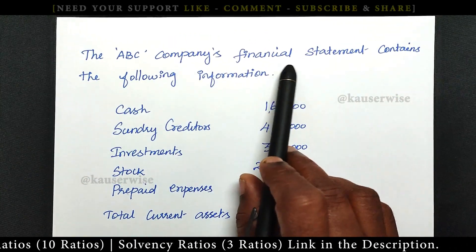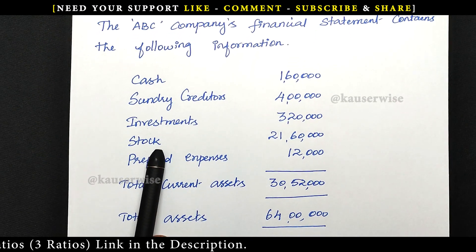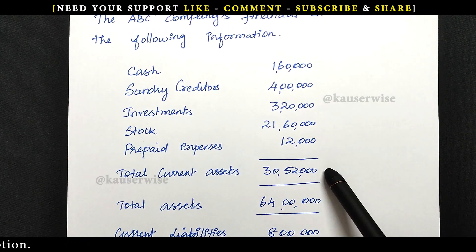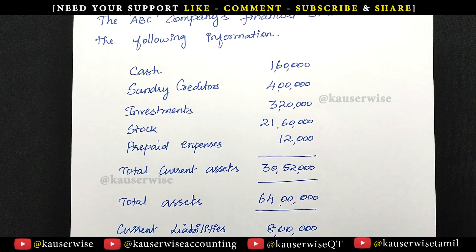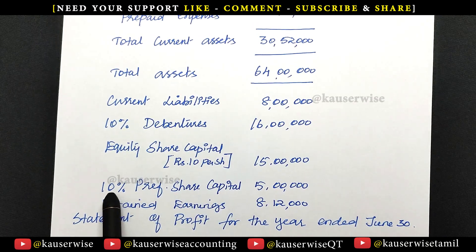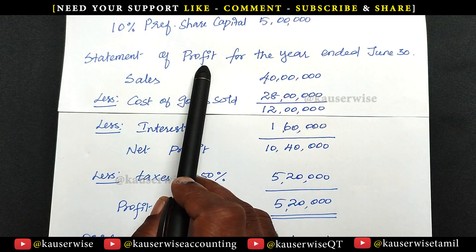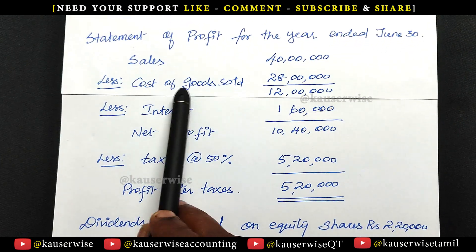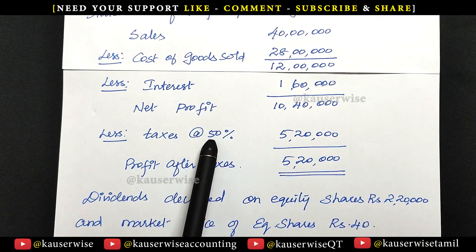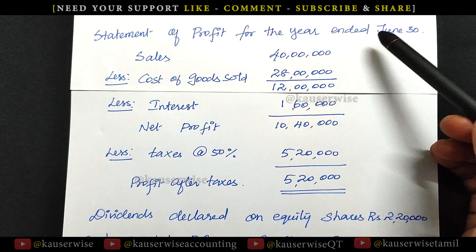See the problem. ABC company's financial statement contains the following information: cash, sundry creditors, investment, stock, prepaid expenses — total current assets — and then total asset, which consists of total current asset plus total fixed asset. Then current liabilities, 10 percentage debentures, equity share capital rupees 10 per share, 10 percentage preference share capital, and retained earnings. Now see the income statement — statement of profit for the year ended June 30th: sales minus cost of goods sold minus interest equals net profit, minus taxes 50 percentage gives profit after tax.